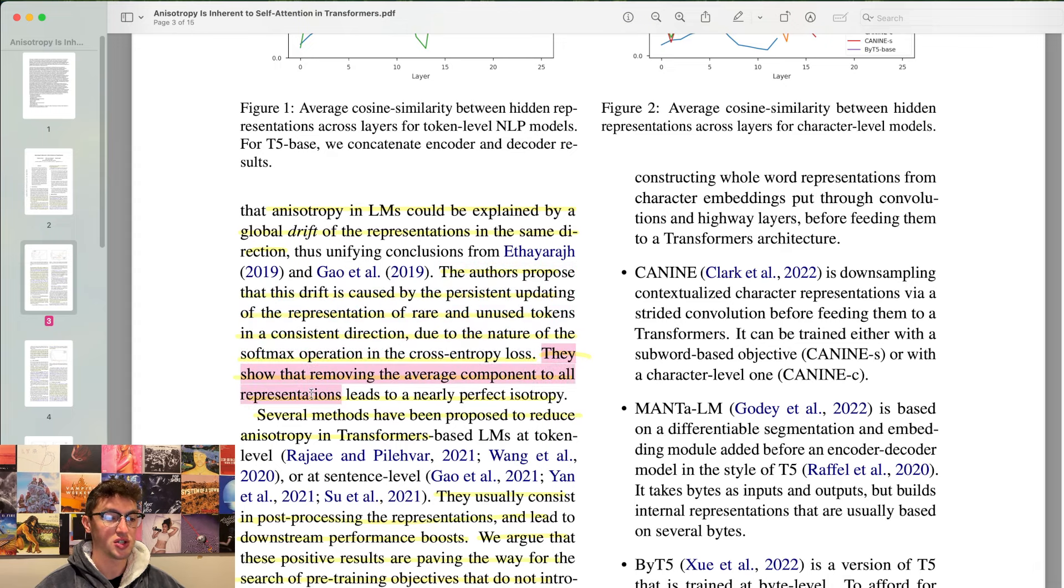They show that removing the average component to all representations leads to near-perfect isotropy. So that just means effectively using layer norm excessively. You will end up with actual isotropy, meaning even spacing around of your angular distance vectors.